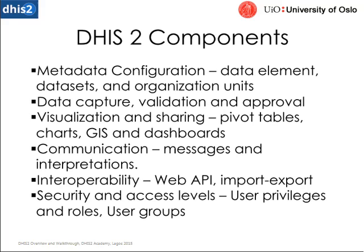Communication includes messages within DHIS2 to other users, and the capacity for DHIS2 to message users externally through email or SMS. This information can also be taken outside of DHIS2 through Web API and web portals, or information from Excel spreadsheets can be imported directly to the system. Data can also be exported into Excel spreadsheets or PDFs for further analysis or to create handouts. Finally, security and access levels allow different users to have different roles and privileges, which maintains a higher capacity for information to remain secure and confidential when required.